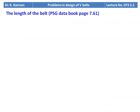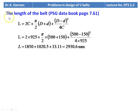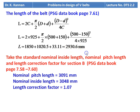Length of belt from equation page 7.61: L = 2 × 925 + (π/2)(500 + 150) + (500 − 150)²/(4 × 925) = 2930.6 mm. From data book for section B, next higher nominal pitch length = 3091 mm, nominal inside length = 3048 mm, length correction factor = 1.07.